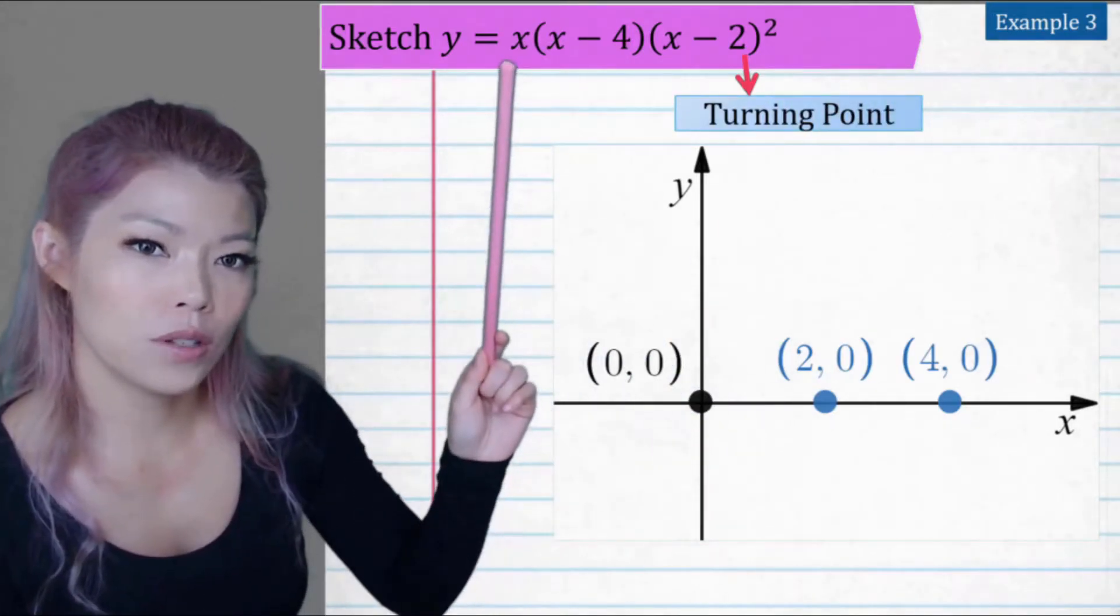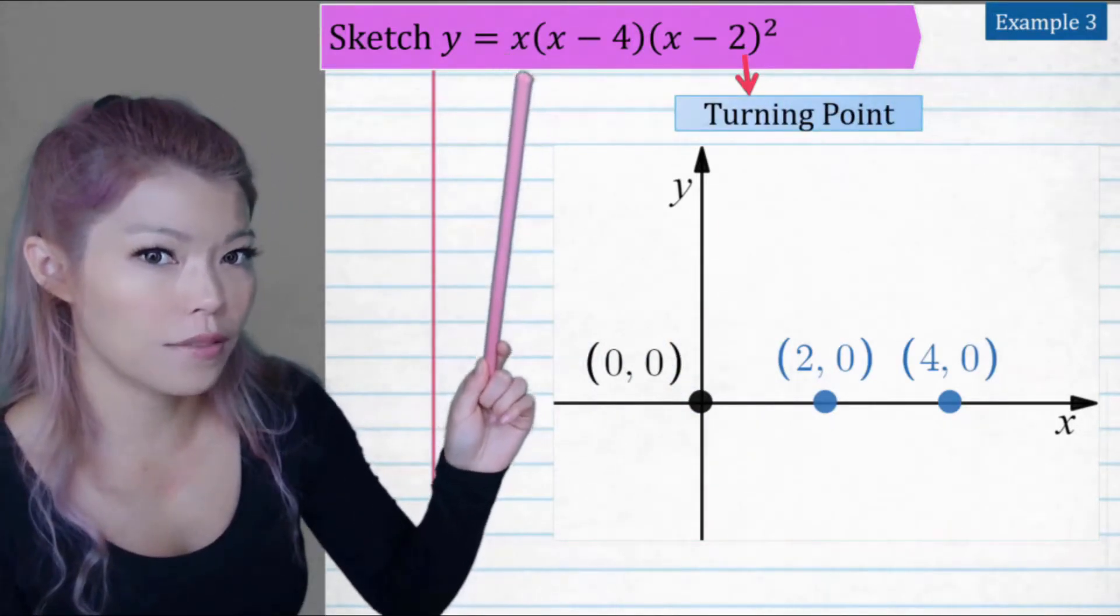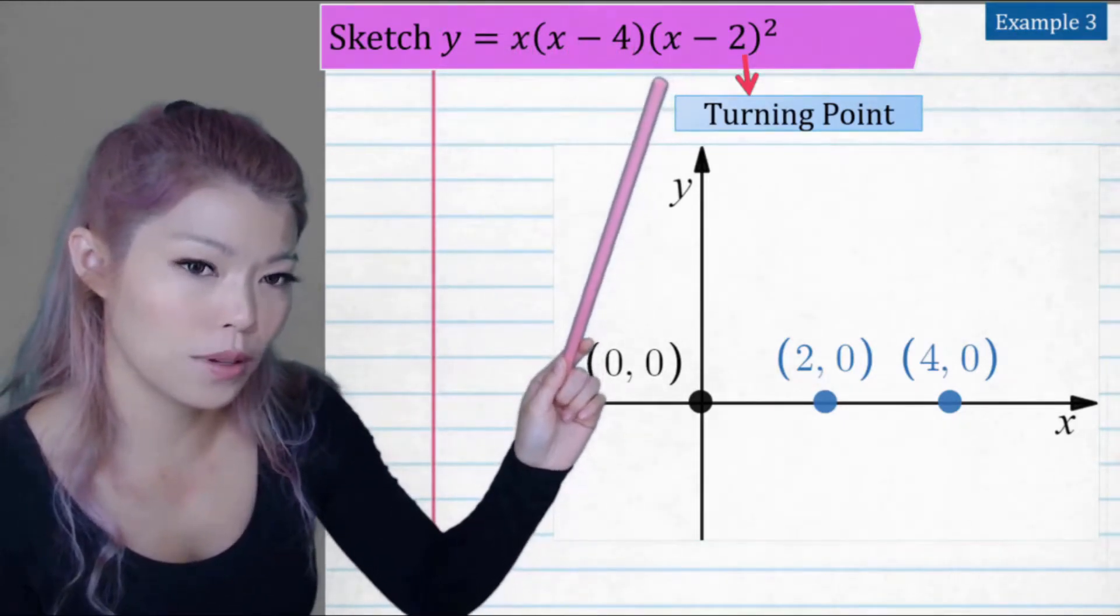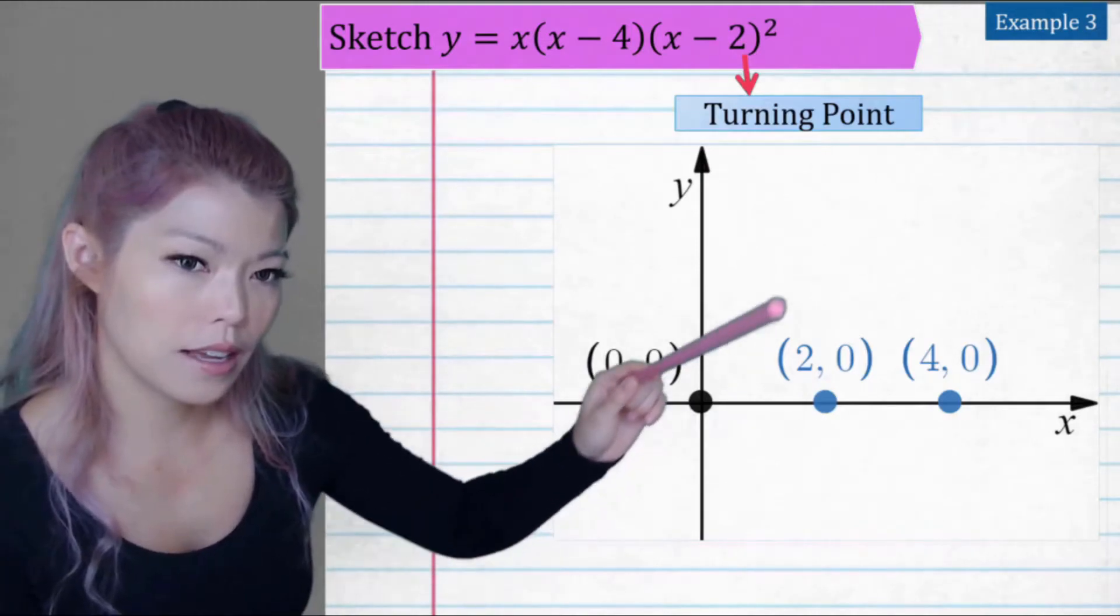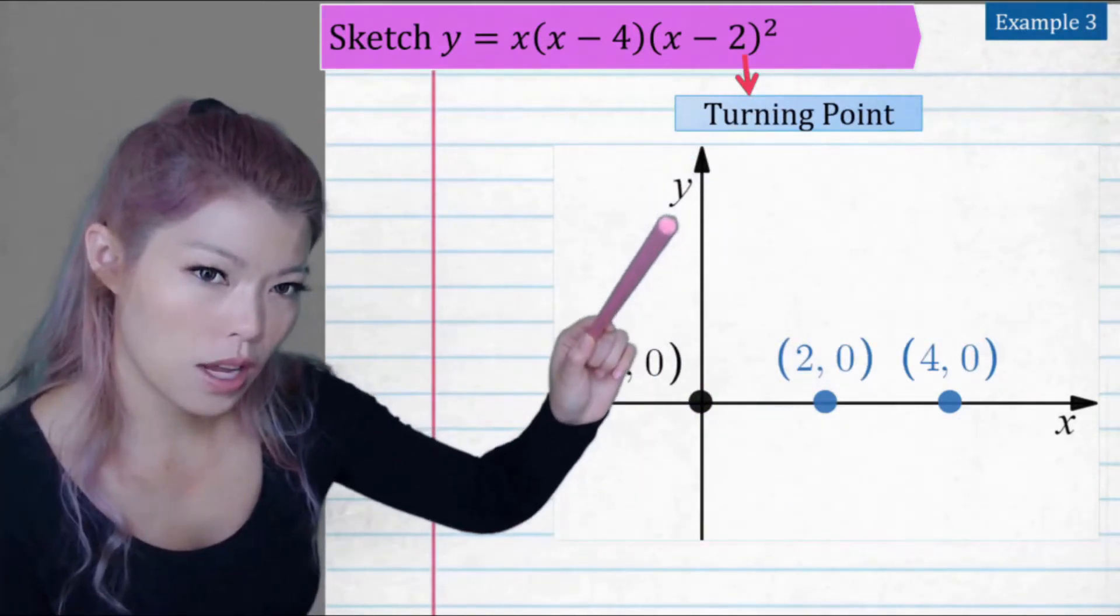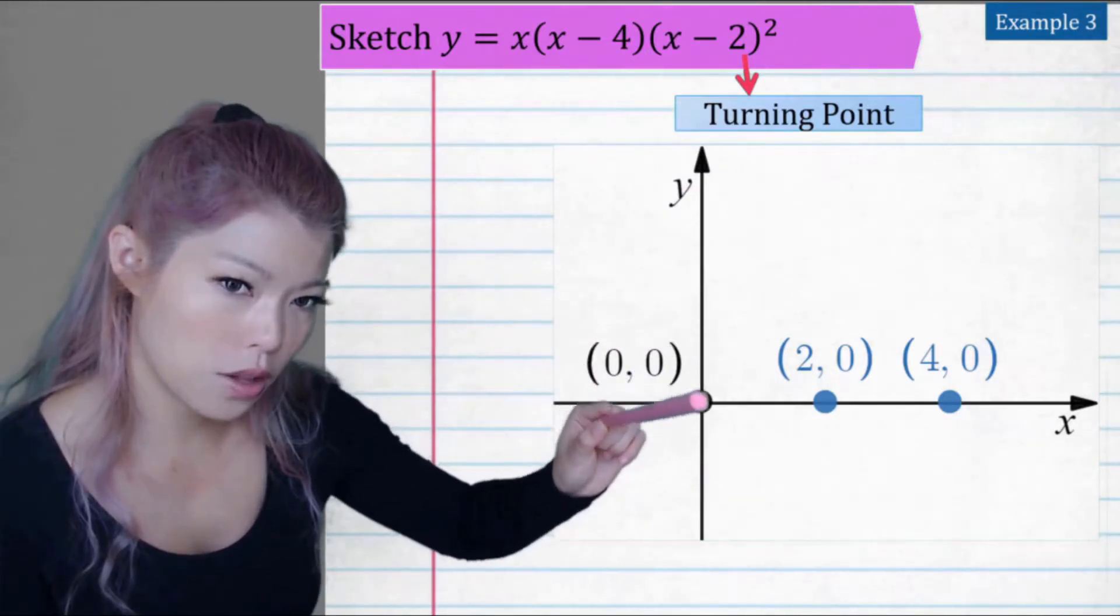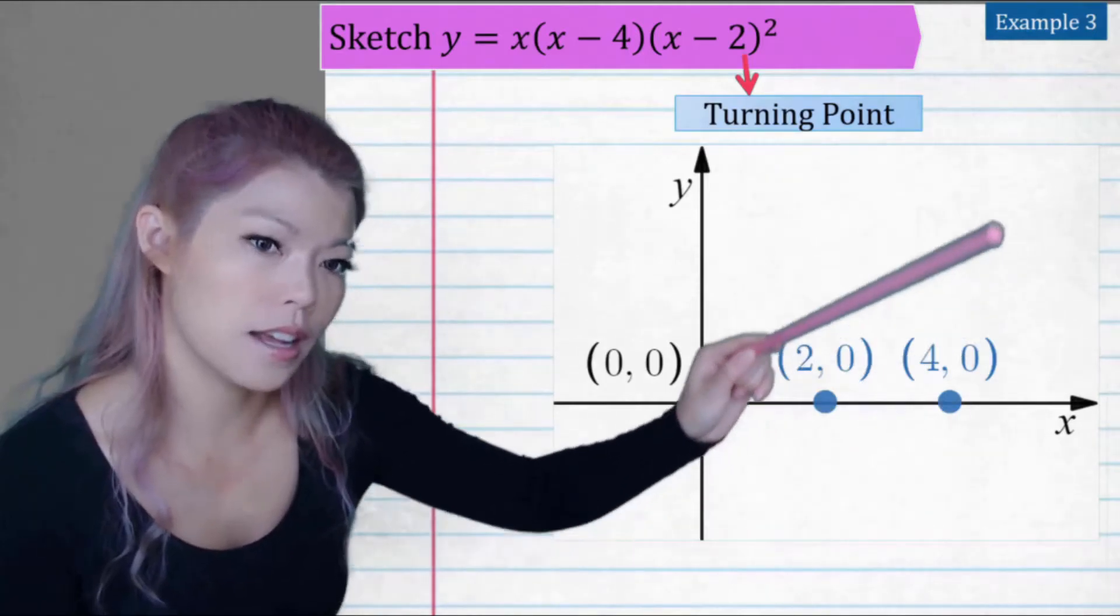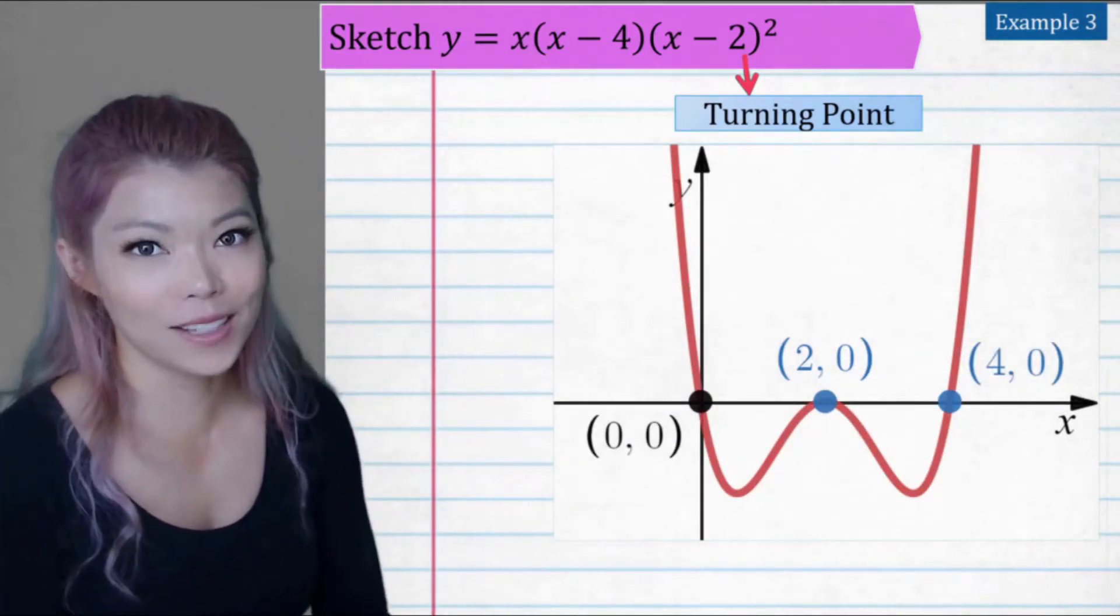So when we sketch this, we first look at is there a positive or negative graph? x times x is positive, times x times x is also positive, so it's going to look like that. But this is a turning point there. So when you go through here, you can go through that first dot, but when we get to this dot, you have to turn and then finish off, just like so.